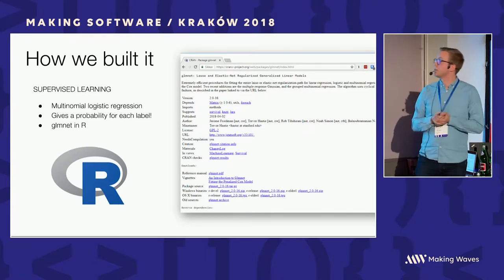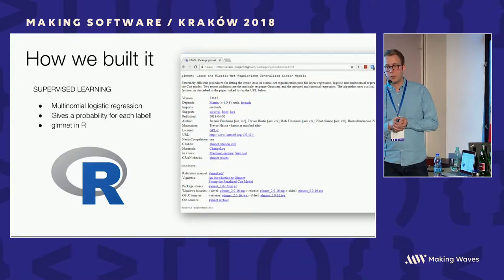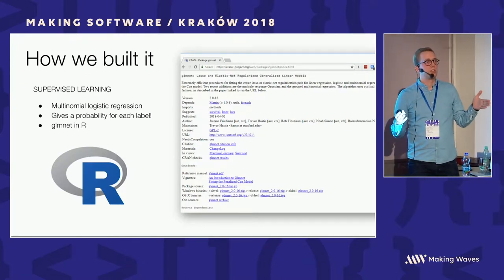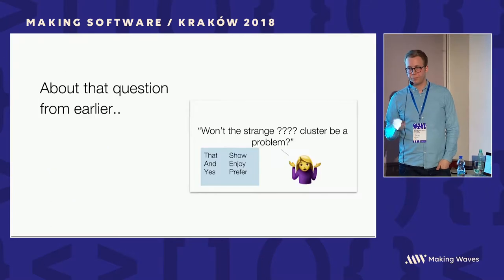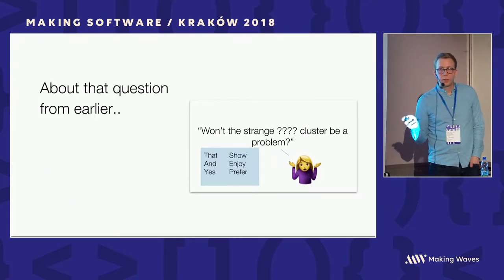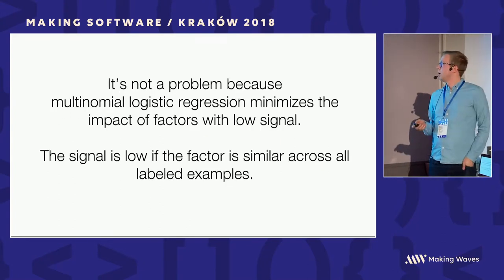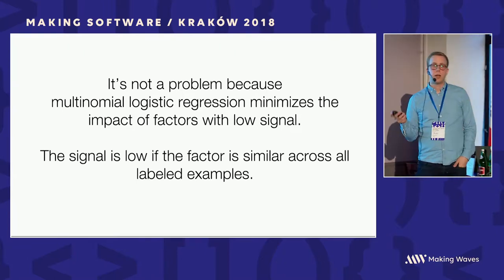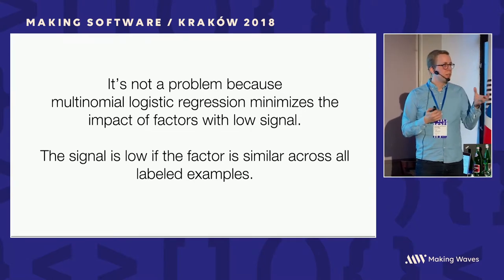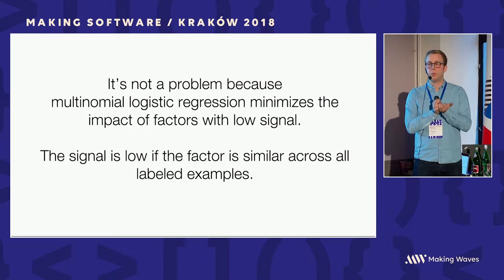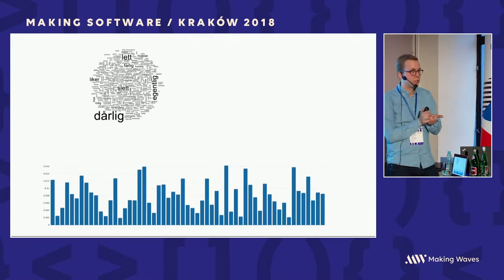One interesting feature of multinomial logistic regression is that it gives a probability for each label. So you give in an article and get back a set of probabilities: this is X% cross-country skiing, X% food, X% fishery.